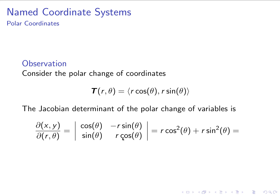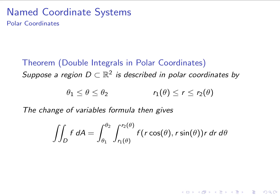Taking the determinant of this 2×2 matrix — multiplying the diagonal and subtracting the product of the other two entries — gives us cosθ · r cosθ = r cos²θ, and then we subtract sinθ · (−r sinθ), so the two negatives cancel and we add r sin²θ. The r factors out, and cos²θ + sin²θ = 1, which tells us the Jacobian determinant is simply equal to r.